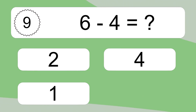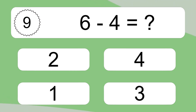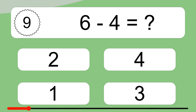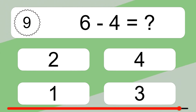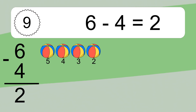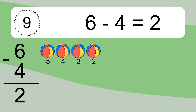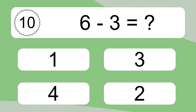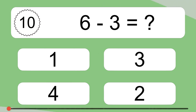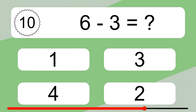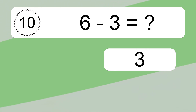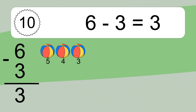6 minus 4 equals what? 6 minus 4 equals 2. Let's count it: 5, 4, 3, 2. 6 minus 3 equals what? 6 minus 3 equals 3. Let's count it: 5, 4, 3.